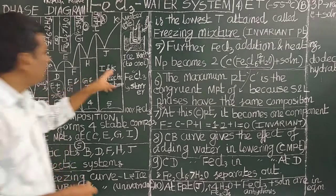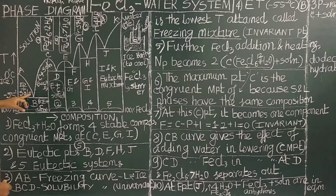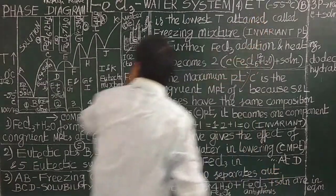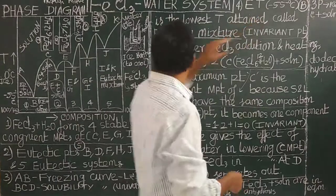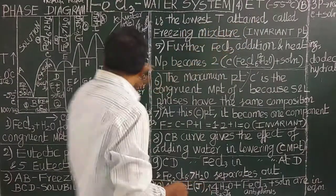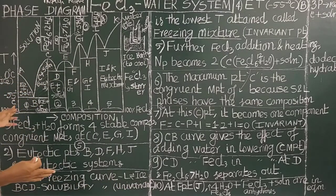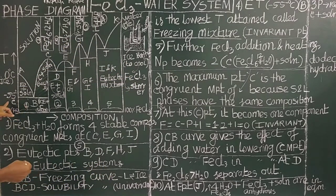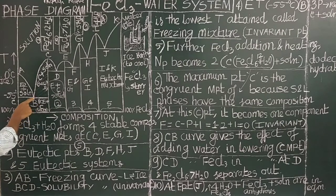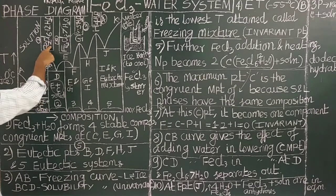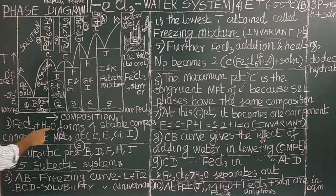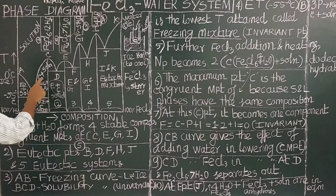On adding ferric chloride, the freezing point decreases. Point B is called the eutectic point — at minus 55°C — which is the lowest temperature attained by the addition of ferric chloride to ice-cold water. At this eutectic point, a eutectic mixture is formed: ice and the stable compound ferric chloride decahydrate.